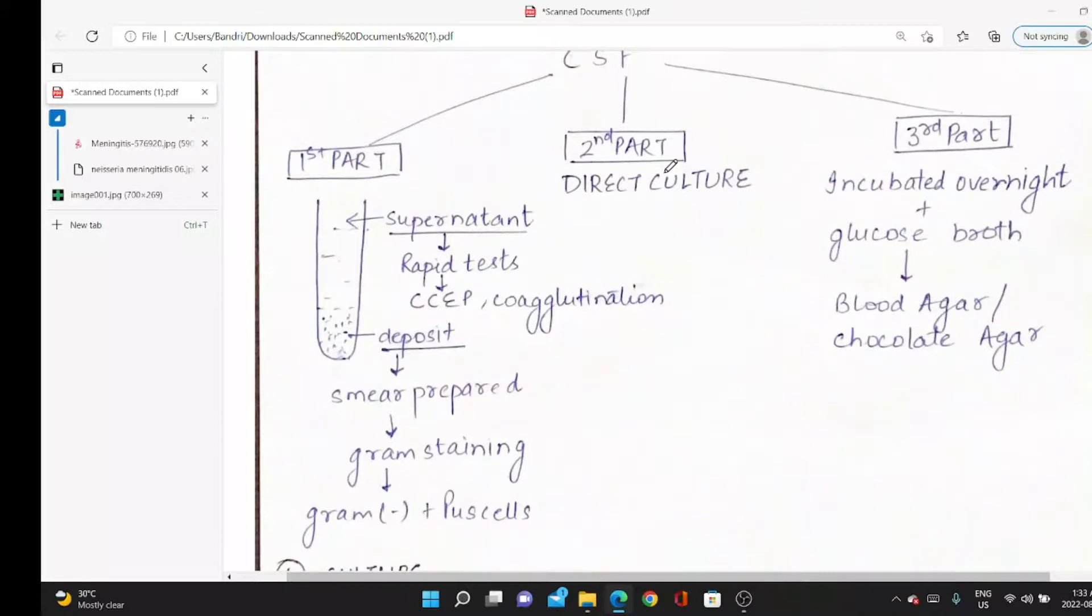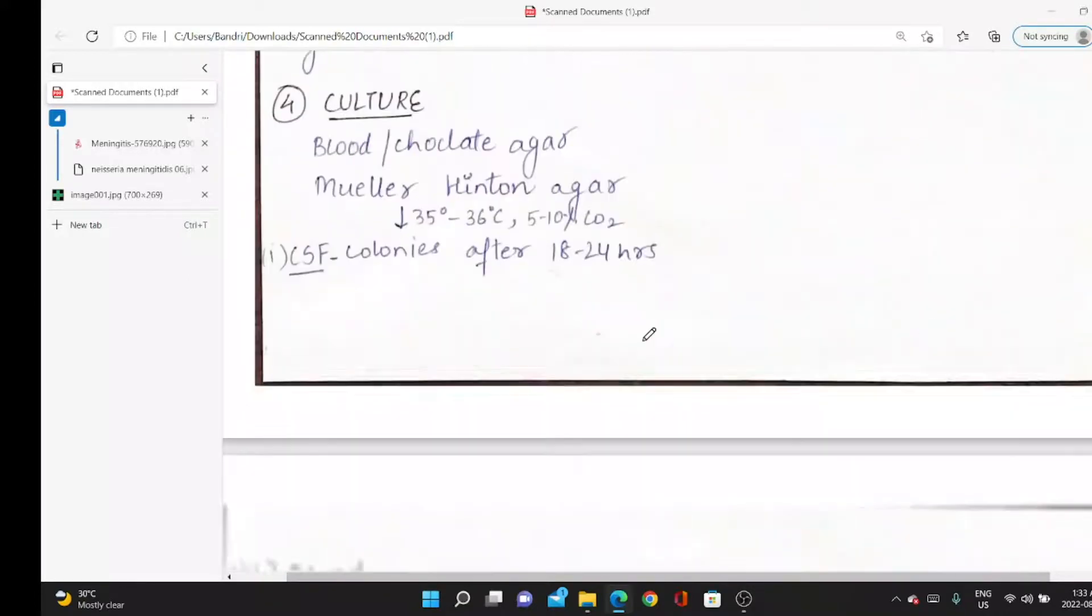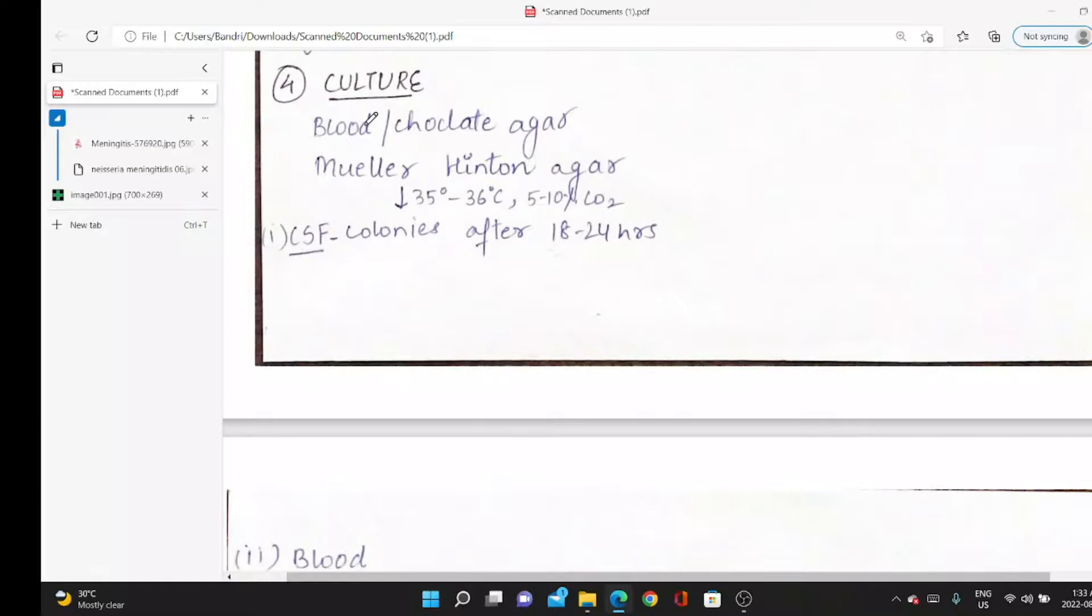Second part is direct culture. Third part: we have to check glucose. Next day, we culture on blood agar and chocolate agar. It's fastidious bacteria with special requirements. The other is selective agar—Mueller-Hinton agar—same conditions: 35 to 36 degrees Celsius, 5 to 10% carbon dioxide.